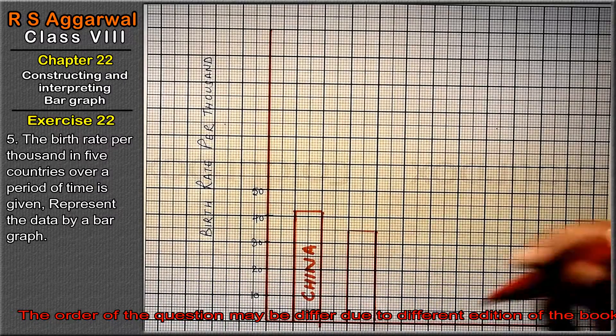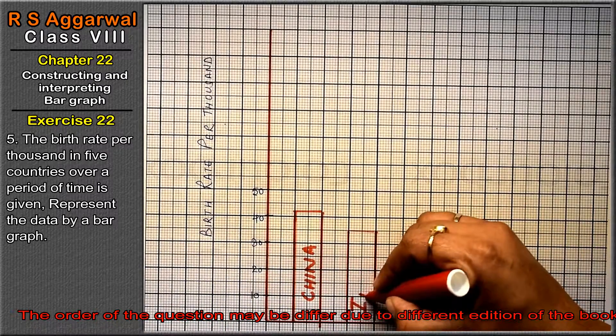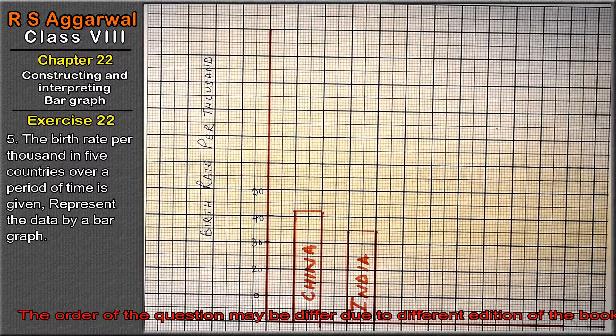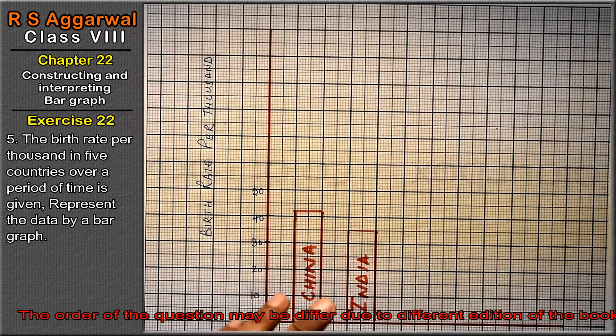Next is Germany, that is 14. 1 block and 4 dots.